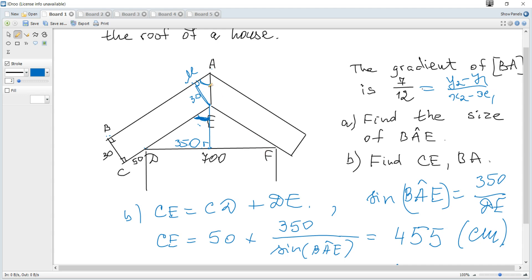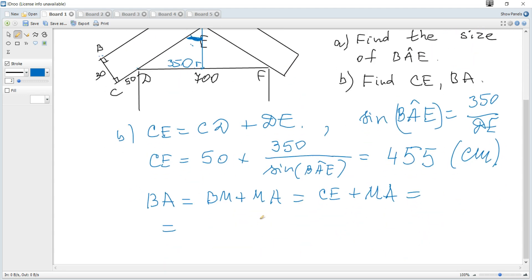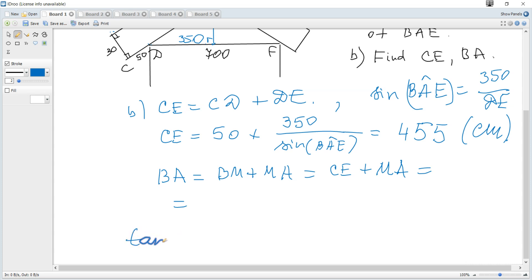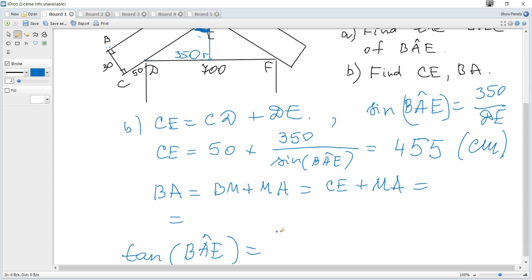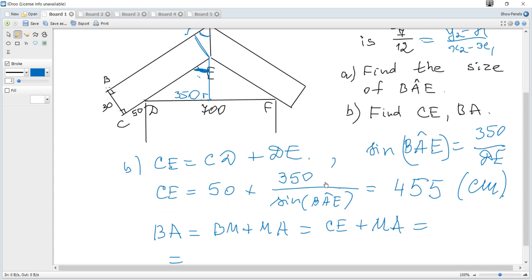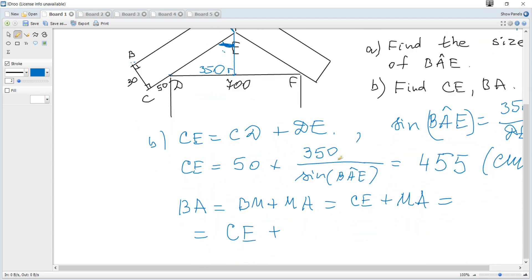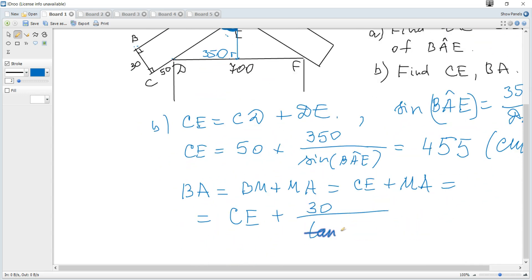We can consider tangent of BAE. Tangent of BAE is opposite over adjacent, which is 30 over MA. So MA is 30 divided by tangent. So it's CE plus 30 divided by tangent of BAE.